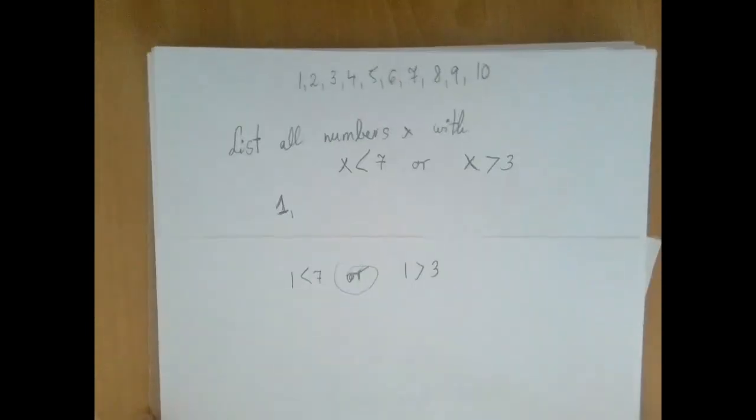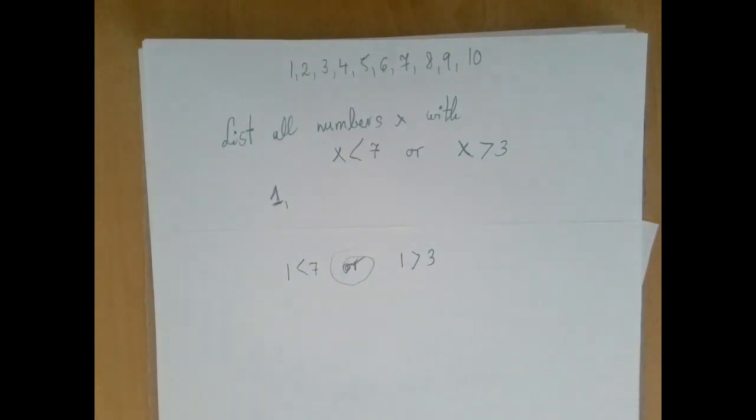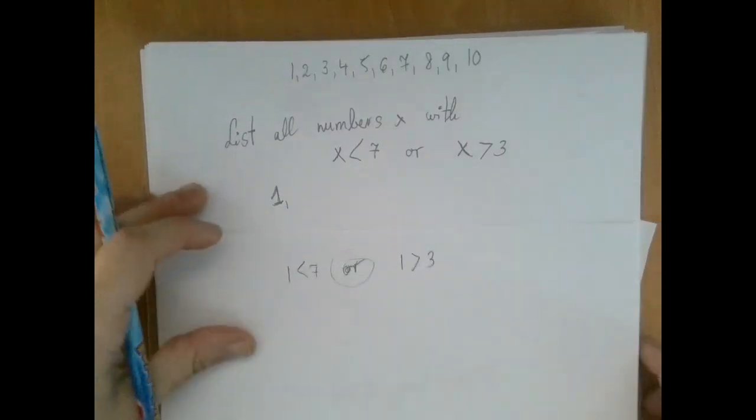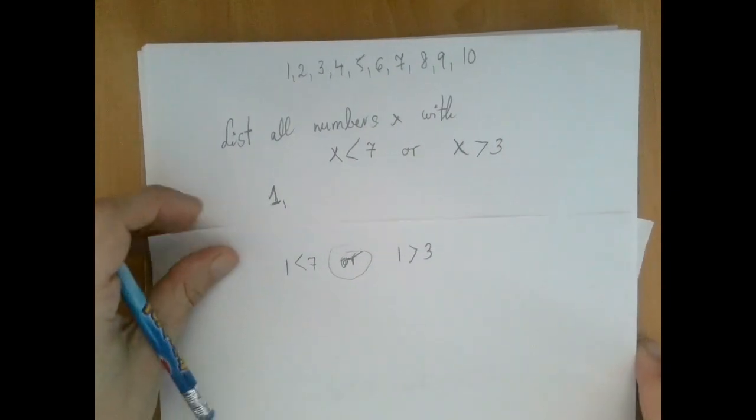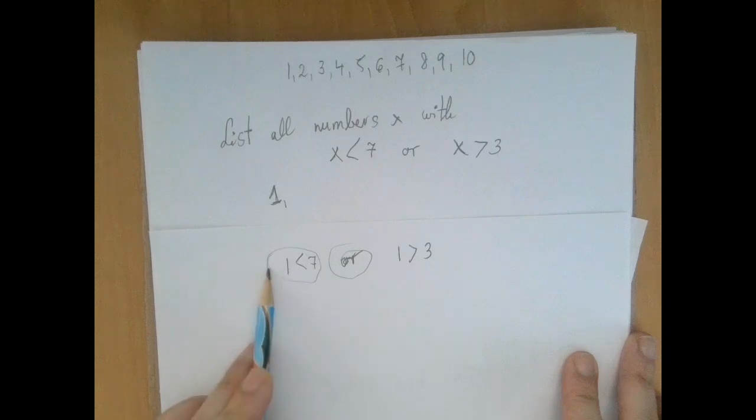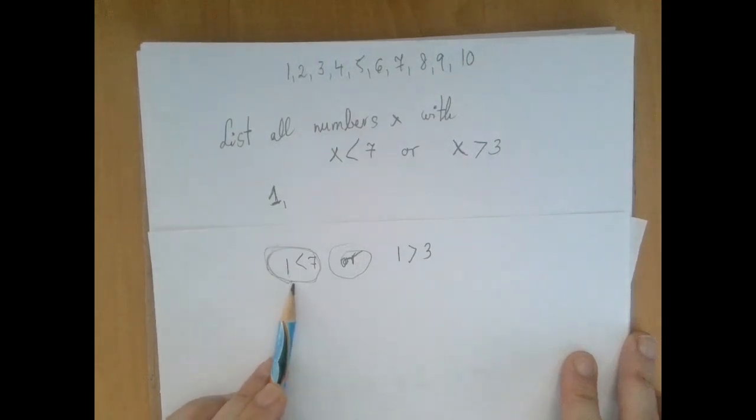And so if this problem is new to us, we can repeat the same thing with 2, 3, 4, 5, and so on. But at this point, let's just be a little bit more slick about it and say, in case of 1, this statement was true because it's less than 7. This statement will remain true if we roll up from 1 to 2, 3, 4, 5, and 6.